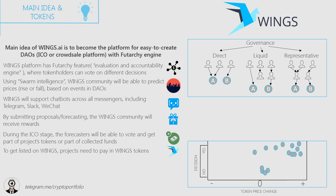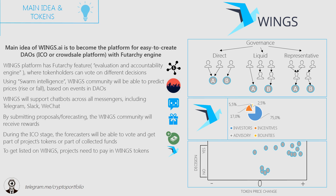Now let's touch on the token characteristics. First is the distribution of collected funds: 75% was distributed to investors, 17% to incentives, 5.5% to advisors, and 2.5% to bounties. There is no inflation. 100 million tokens were created. During the ICO, the project collected 2,000 bitcoins. The profits are made only by active participants of the Winx platform. The capitalization of Winx at the moment is 20 million dollars, which is quite impressive.